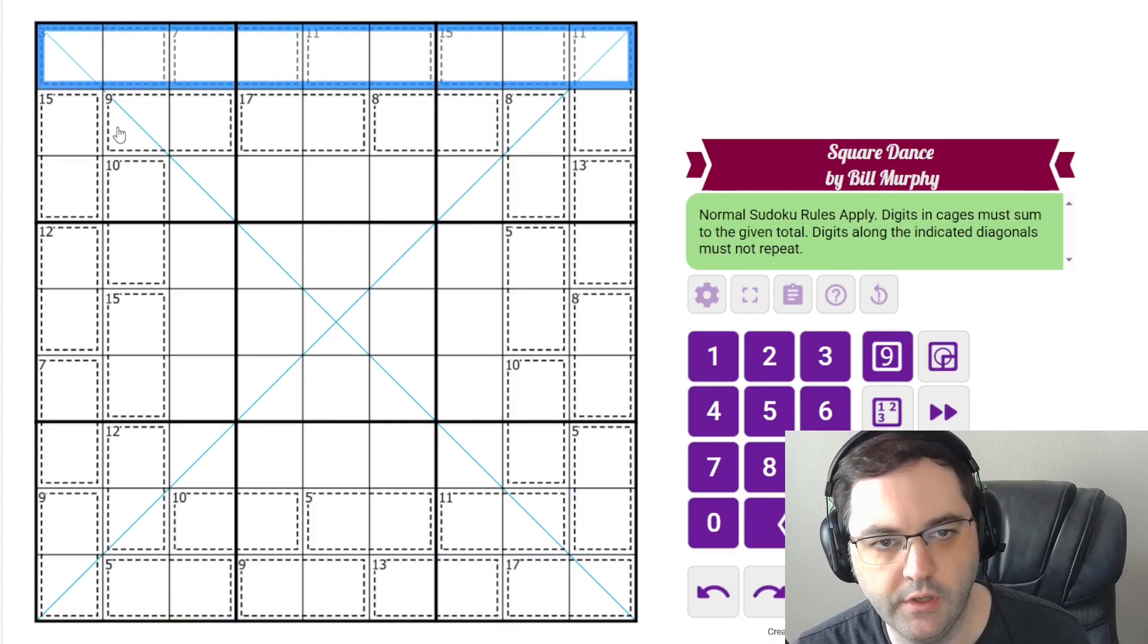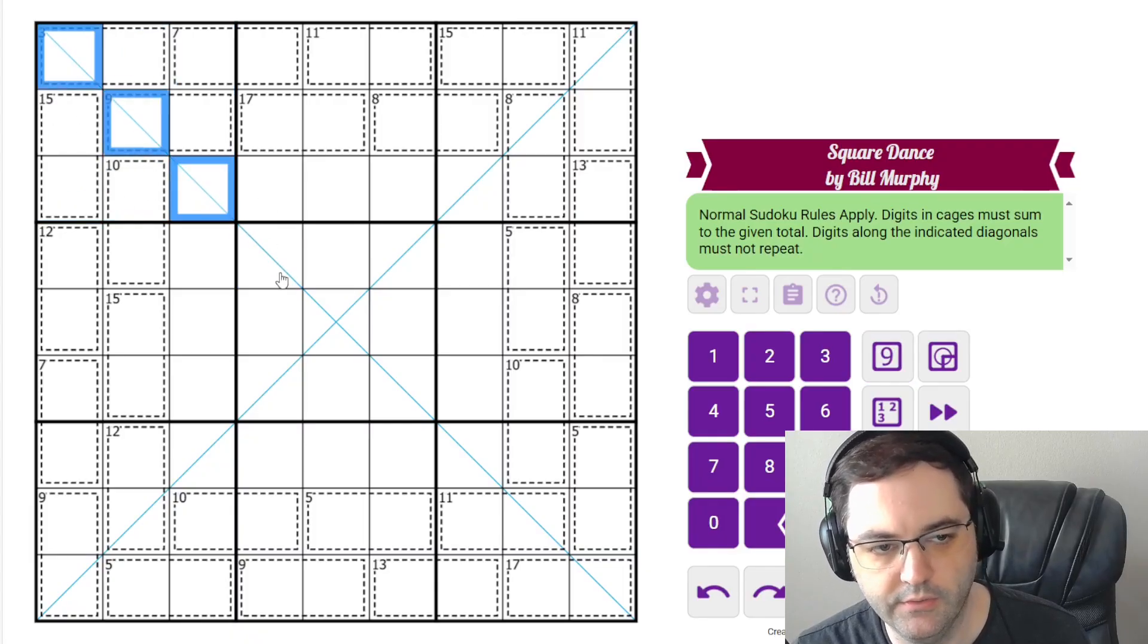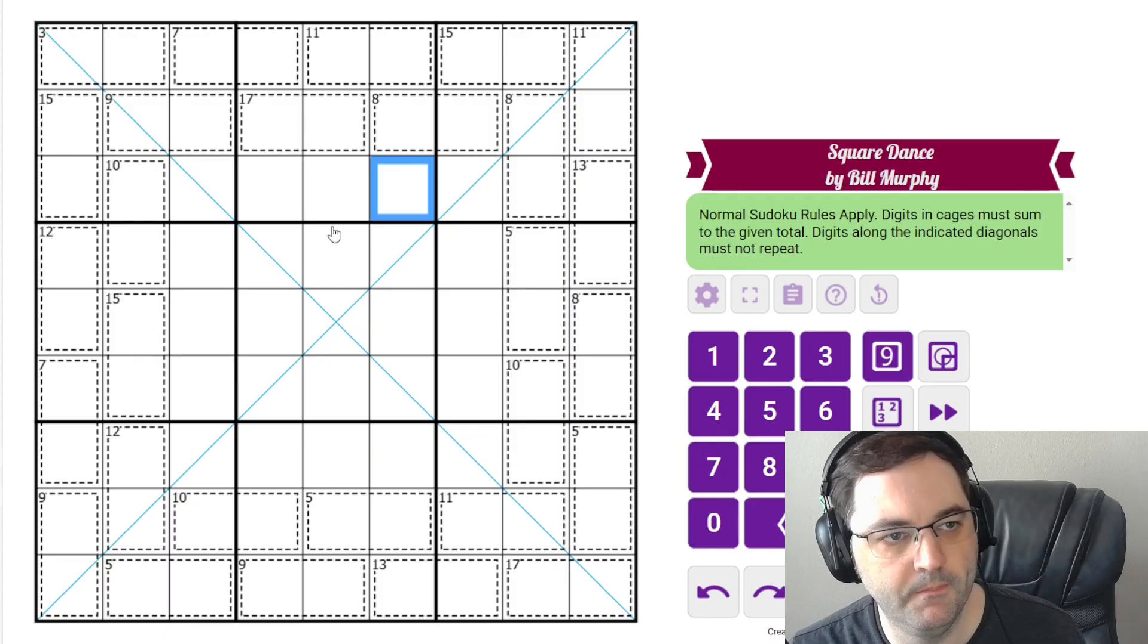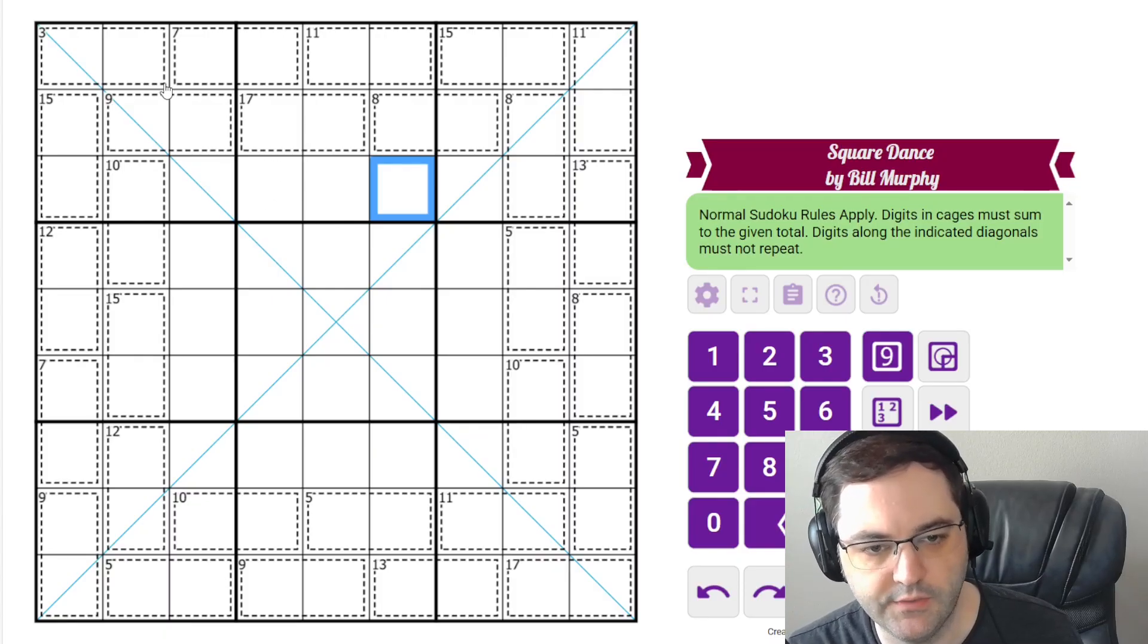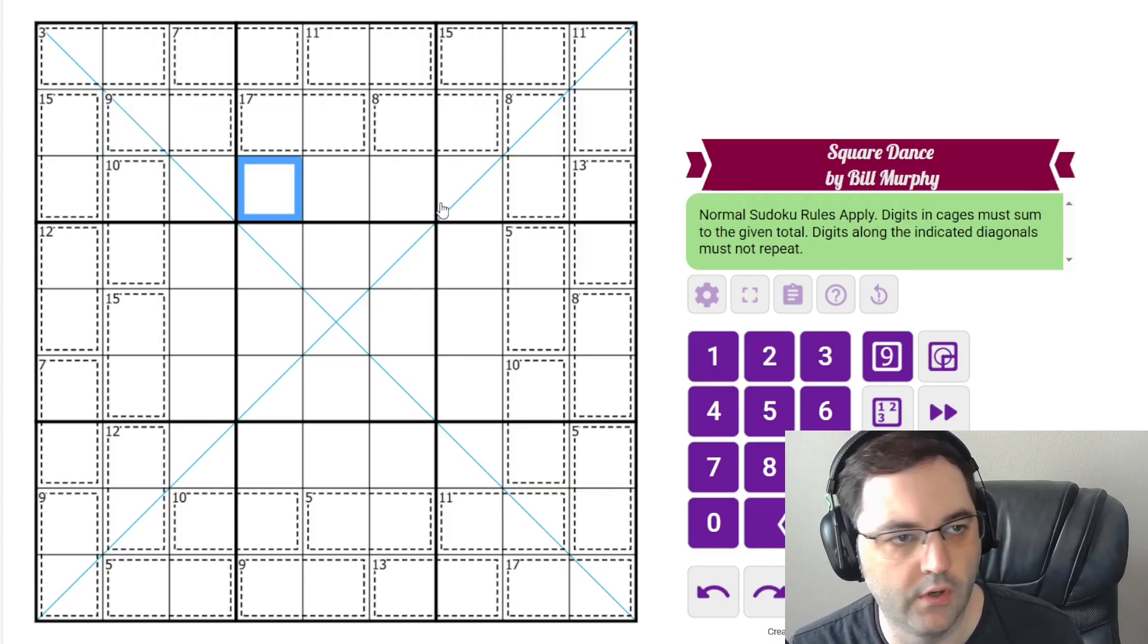We have normal Sudoku rules, 1 to 9 each row, column, and 3 by 3 box. Additionally we have the diagonals, which also must contain 1 to 9 exactly once each, no repeats. And then we have cages around the grid. All the cages are dominoes in this puzzle. The number in the top left corner gives the sum of the digits in the cage. So these two digits sum to 9. Those are the rules.